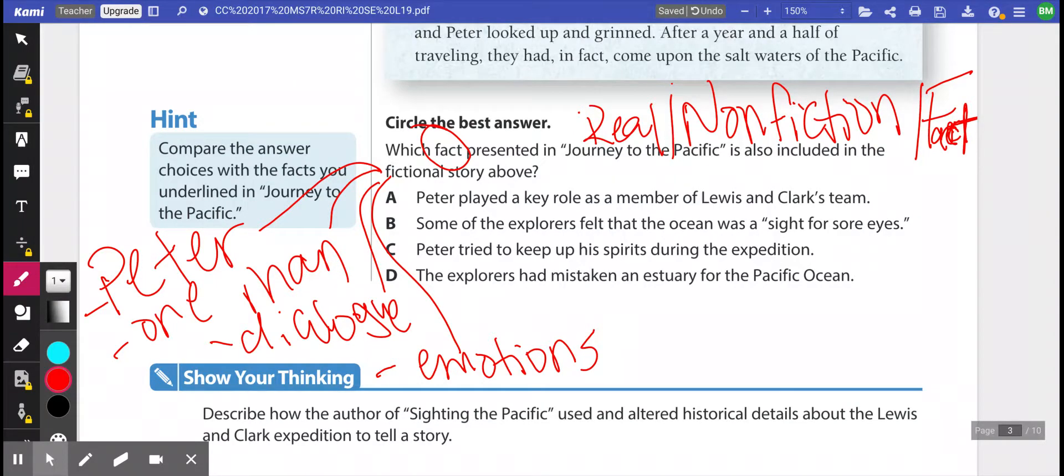A says Peter, so take a second and see if you can figure out which of these four answer choices is the factual piece of evidence in our story versus the things that are fictional elements that go along with our plot diagram. Hopefully by now you've taken the time to look things over. A says that Peter played a key role as a member of Lewis and Clark's team. Well, Peter is a character that is a made up person. So A cannot be the answer. That was not in our chart that showed us what really happened along this journey, this expedition.